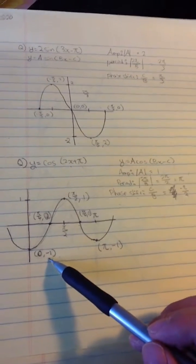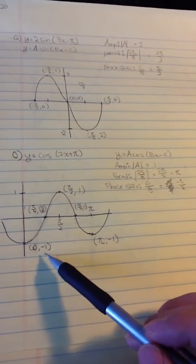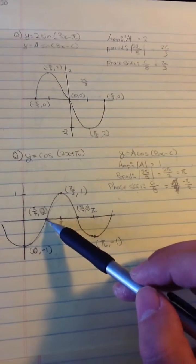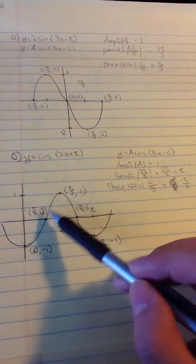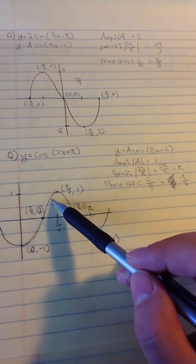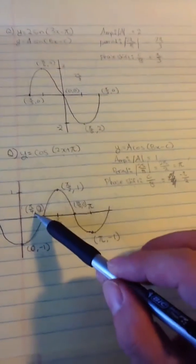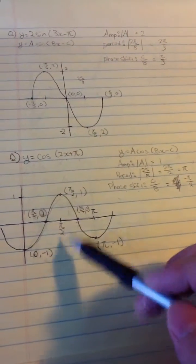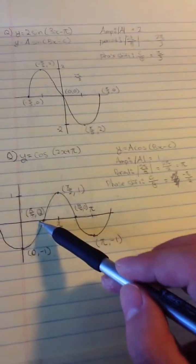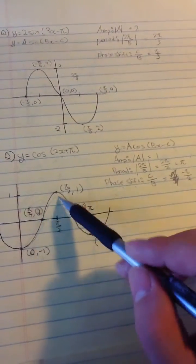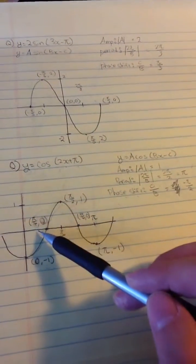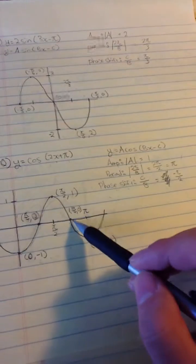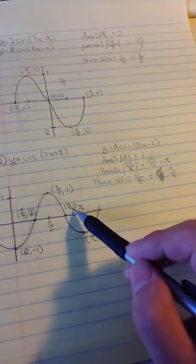At the minimum points we have x = 0 and y = negative 1, also because of the amplitude. Where the graph crosses the x-axis and y equals 0, we have x = π/4. Since the period is π, the midpoint is π/2, and dividing that half-cycle in half gives us π/4. Similarly, the other zero crossing is at x = 3π/4, y = 0.